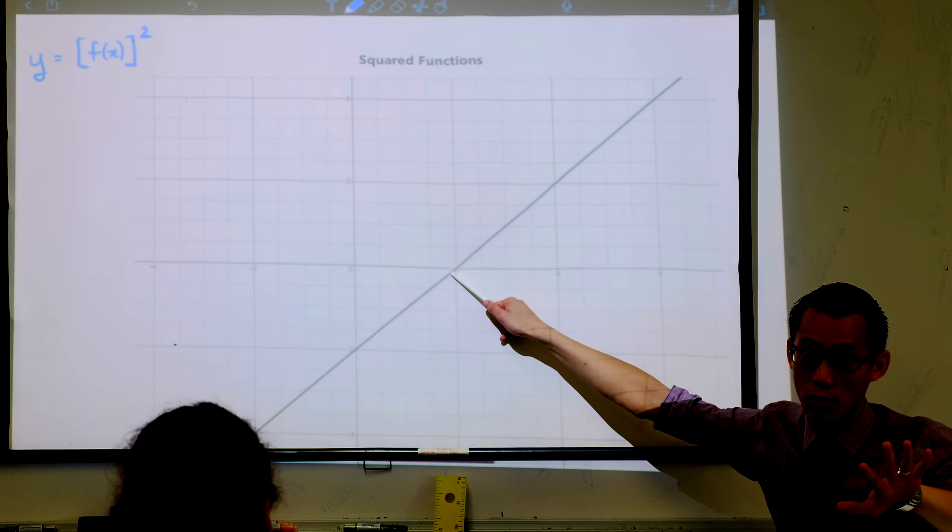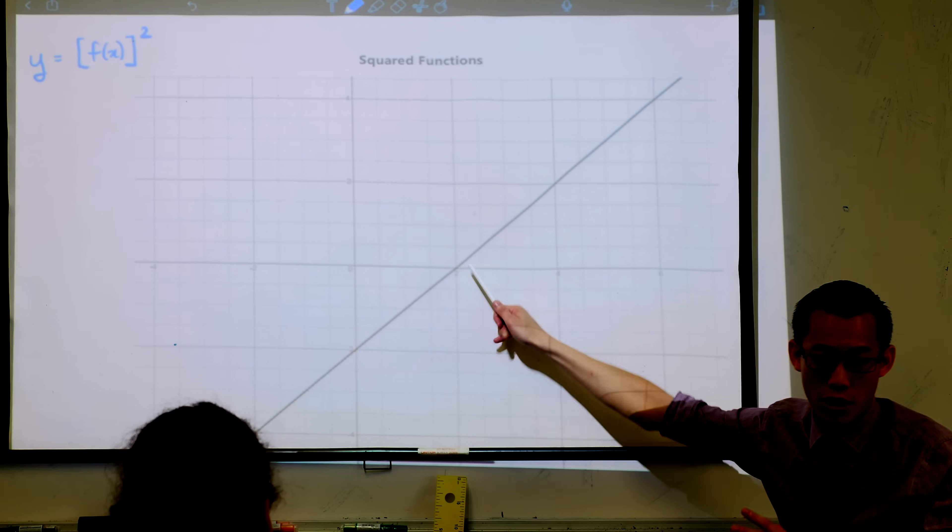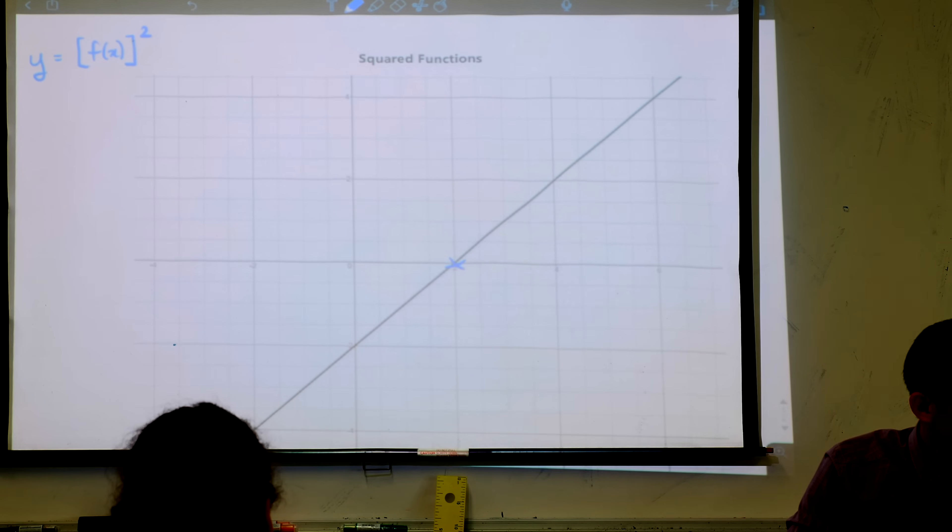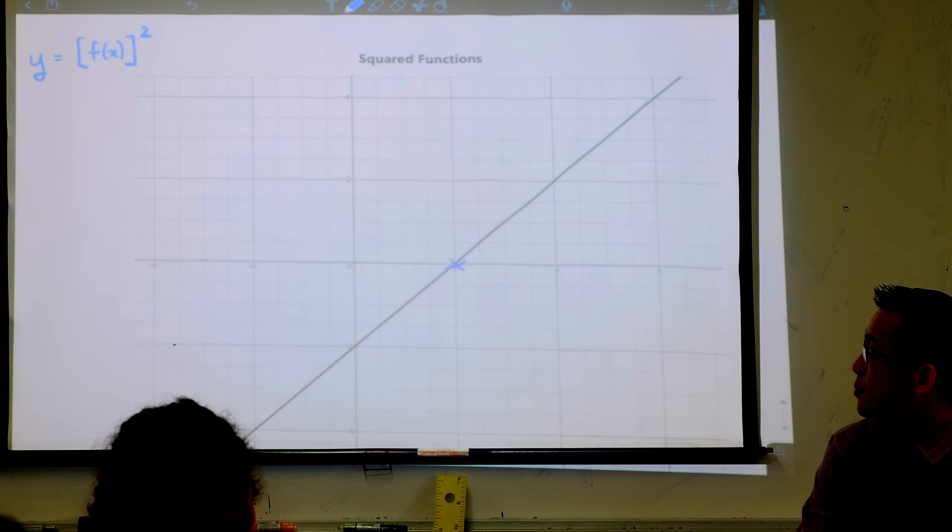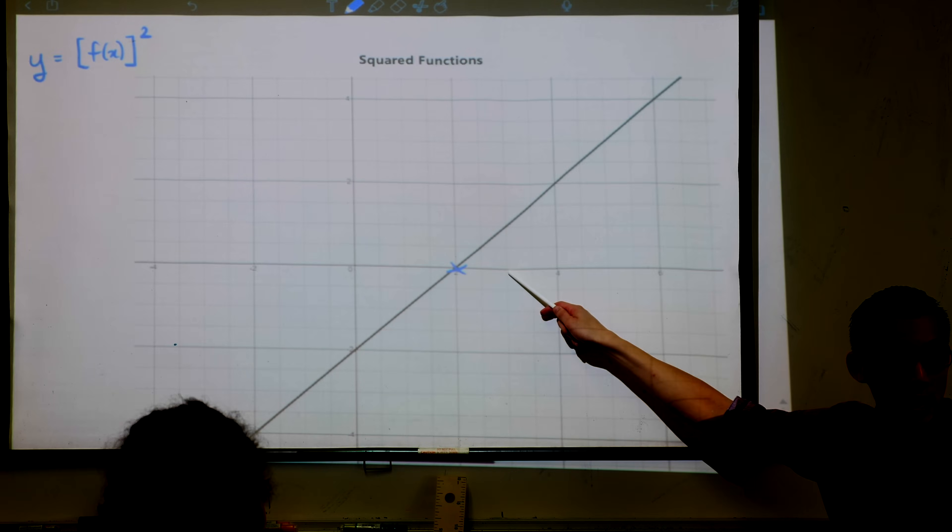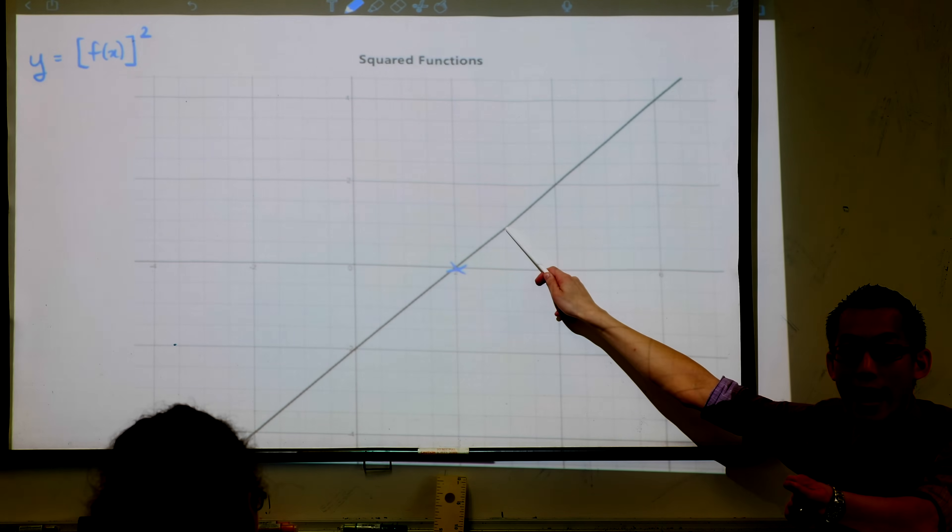So when y equals 0, what happens when you square 0? You get 0. That's handy. What about 1? Where is y equal to 1? Can you see it? It's at x equals 3. What's the square of 1? It's just 1.